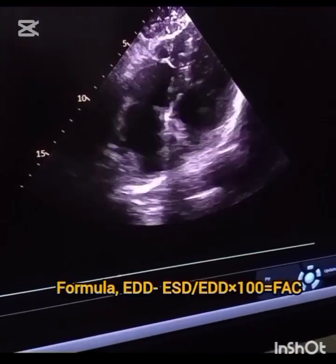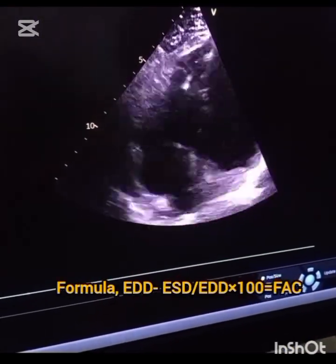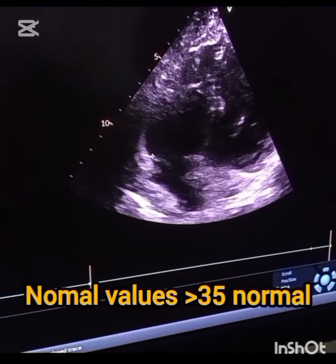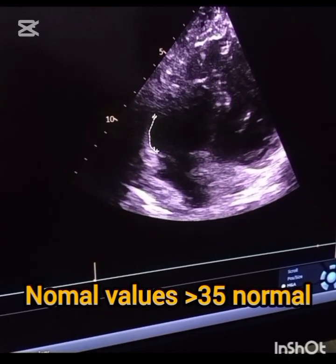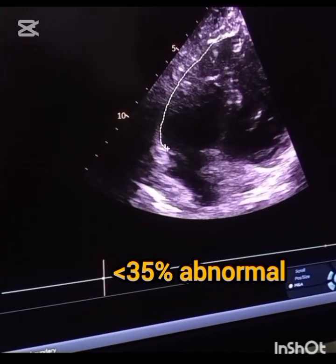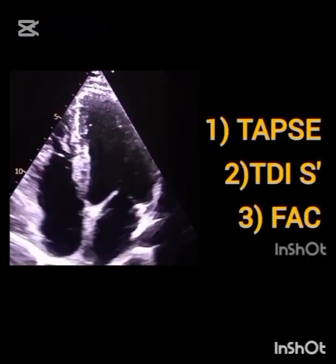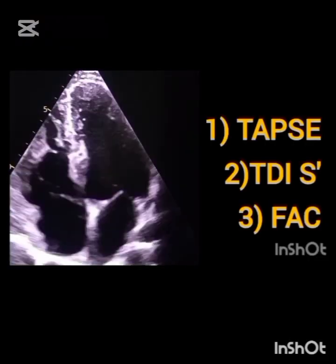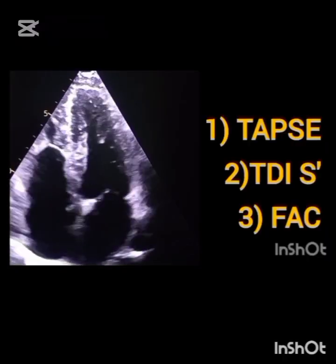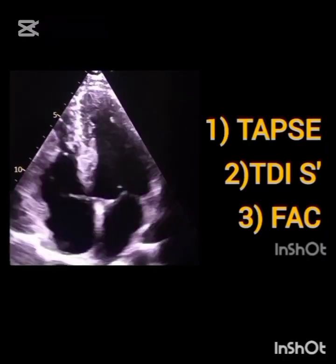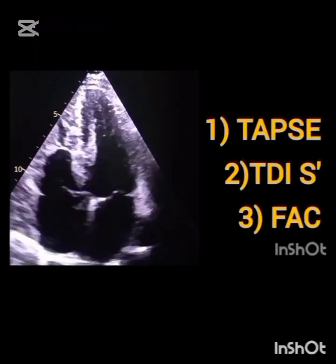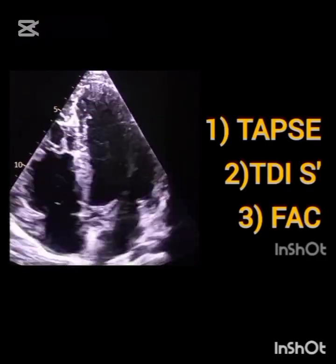The machine will automatically calculate the FAC, which here is 39%. If your machine doesn't calculate it automatically, use the formula manually. Greater than or equal to 35% fractional area change is normal. Less than 35% indicates right ventricle dysfunction. Right ventricle plays a vital role in overall cardiac performance, pulmonary circulation, and patient prognosis.